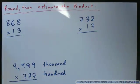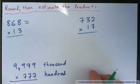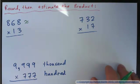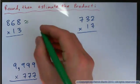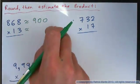So we're going to round 868. Now you probably want to round that to the nearest hundred, right? So round 868 and what do you get? Round 13. What do you get if you round 13?